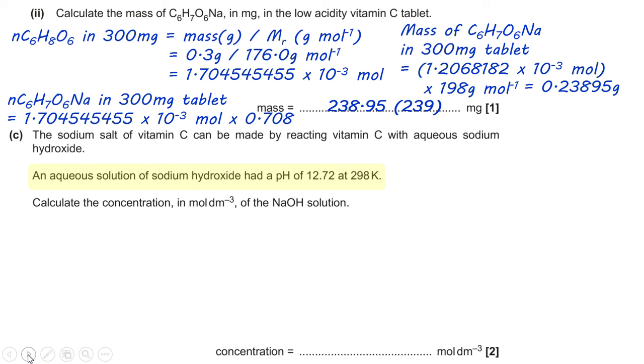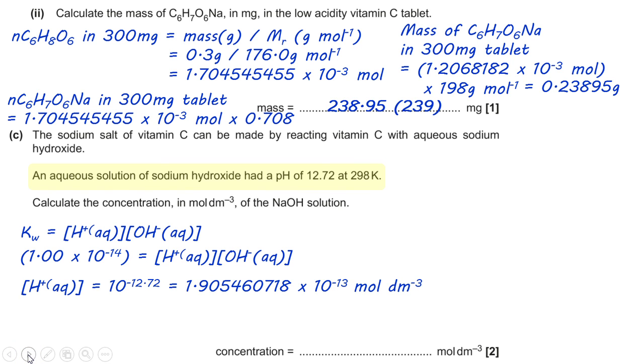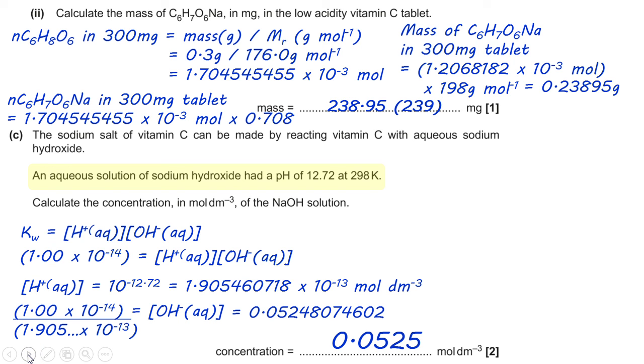Now, finally, you want the concentration of the NaOH solution. So, using the Kw expression, you can rearrange it to get H plus in brackets. H plus aqueous. So, that gives me 0.0525. Okay. Thanks for listening. Until next time, see you soon.